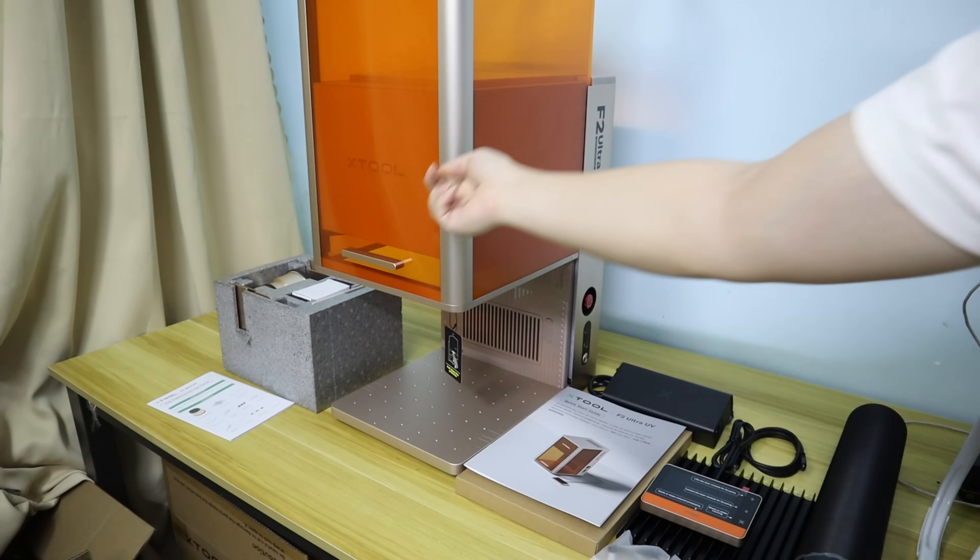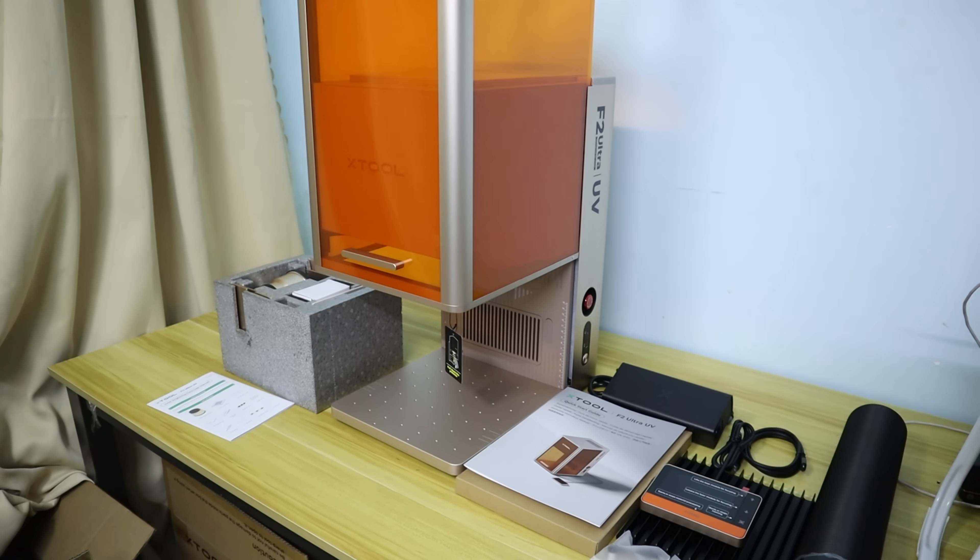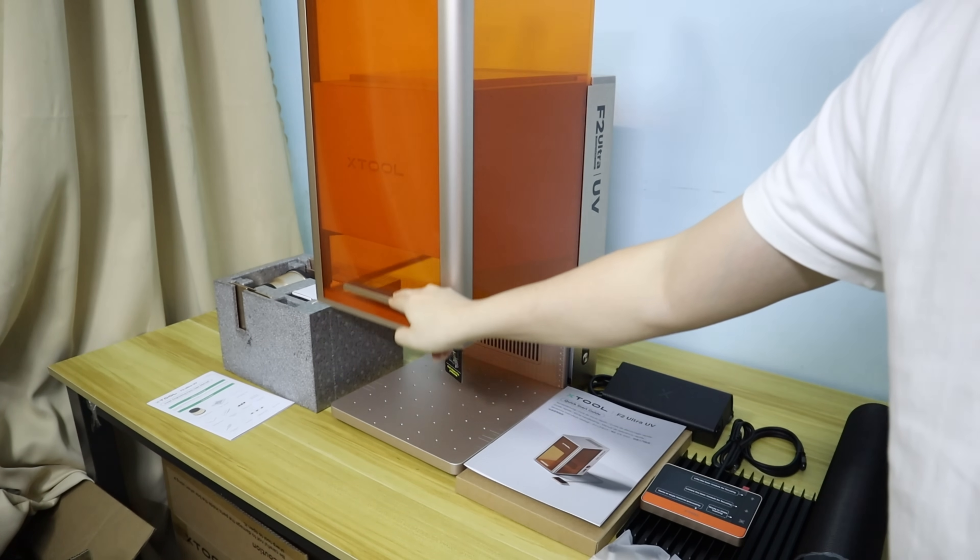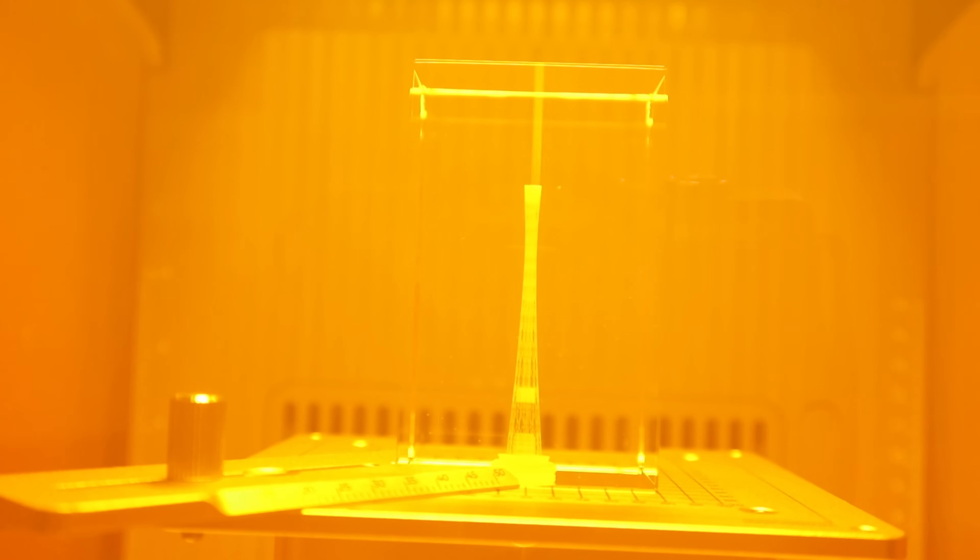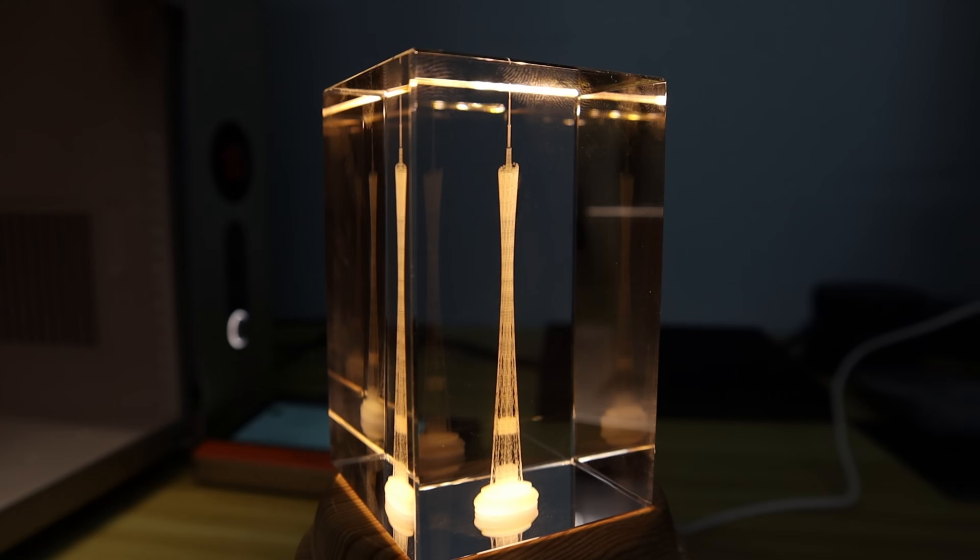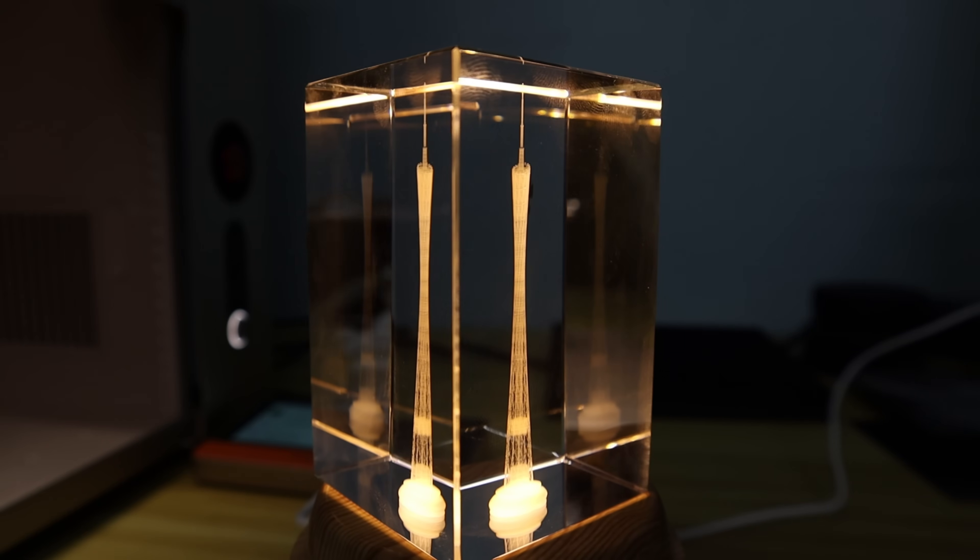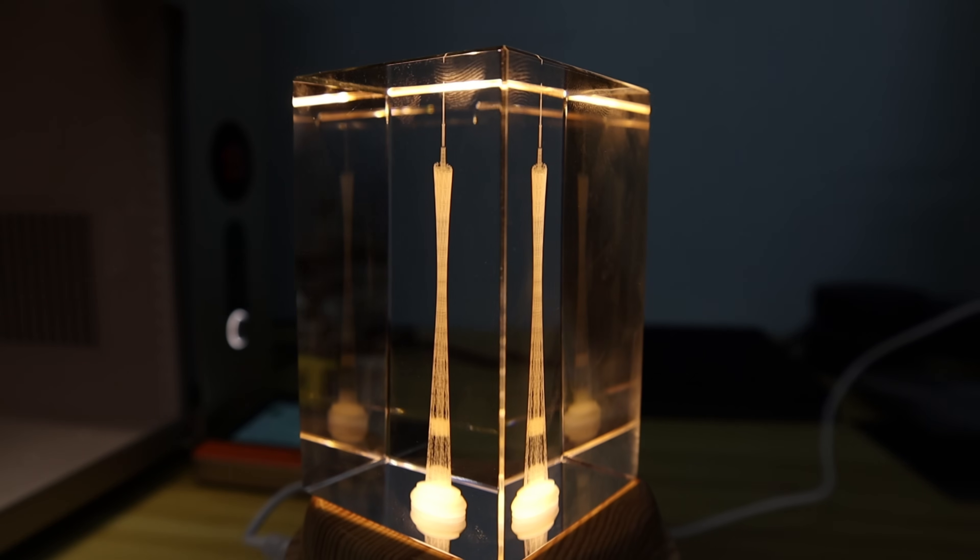The ACE2-F2 Ultra UV laser engraver features a 5W 355nm UV laser, enabling it to engrave, cut, or 3D engrave inside glasses. This is a capability unavailable in other laser engraver types, such as diode, fiber, or carbon dioxide lasers.